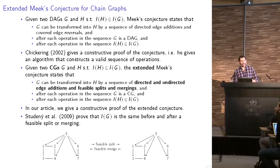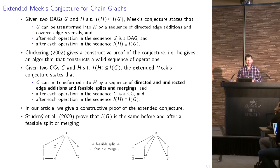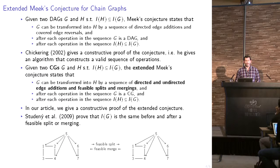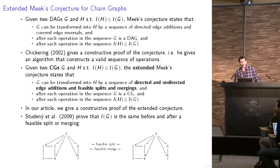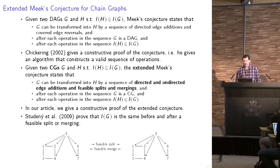A few words about feasible splits and mergings, which are the equivalent of covered arc reversals in DAGs but for chain graphs. These operations modify a chain graph into an equivalent chain graph — they change the topology but not the independence model represented. They were proposed by Studený and collaborators in 2009. Here is an example: we have a connectivity component, which is a maximal connected undirected subgraph, and a feasible split of this component produces a new chain graph where some edges have been converted into arrows and the component is split into two smaller components. Going from the second graph back to the first is a feasible merging.